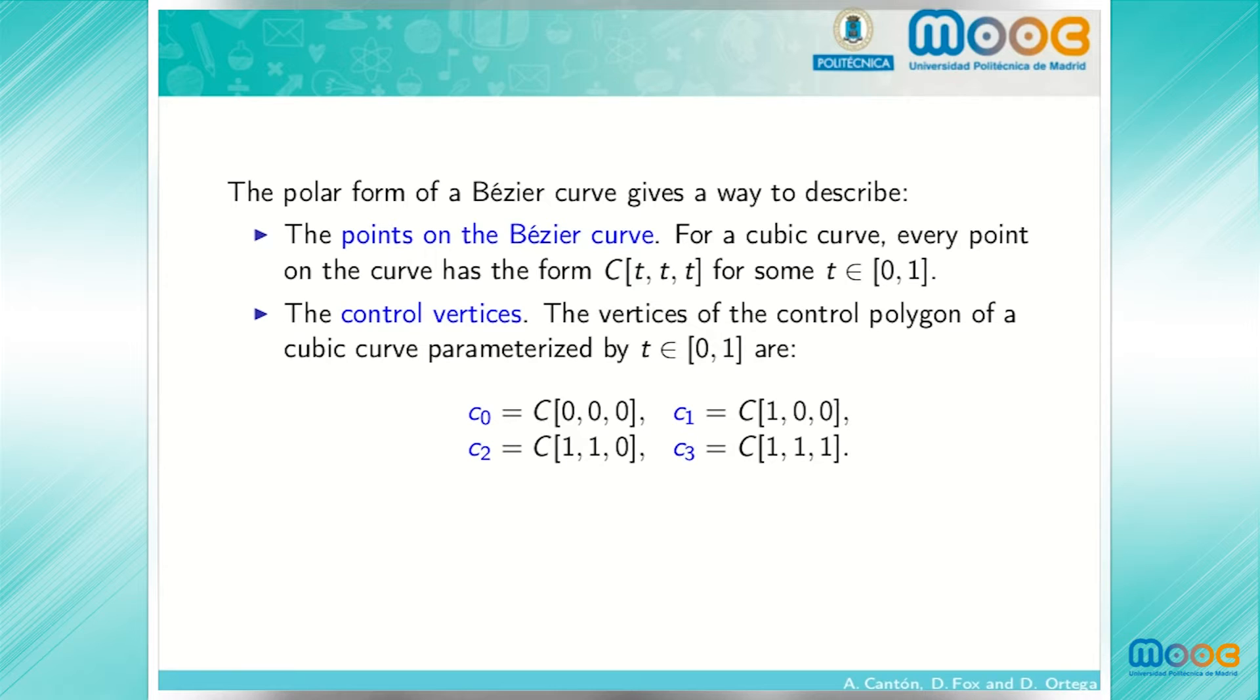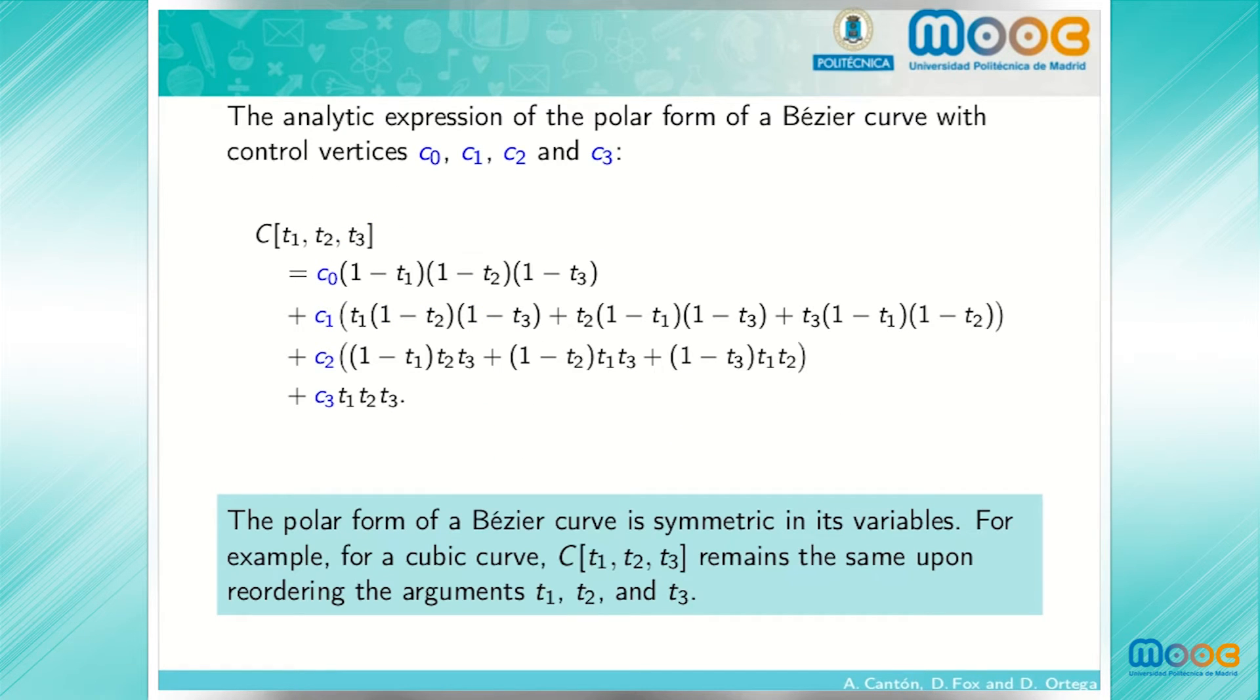If we have three proportions and we set each of them to 0 or 1, there are eight possible ways to do that. There are only four control points. This is explained by the fact that the choices 1, 0, 0, 0, 1, 0, or 0, 0, 1 all yield the second control point. This is a consequence of the fact that the analytic expression for the cubic Bezier curve in terms of t sub 1, t sub 2, and t sub 3 is symmetric in the arguments t sub 1, t sub 2, and t sub 3.